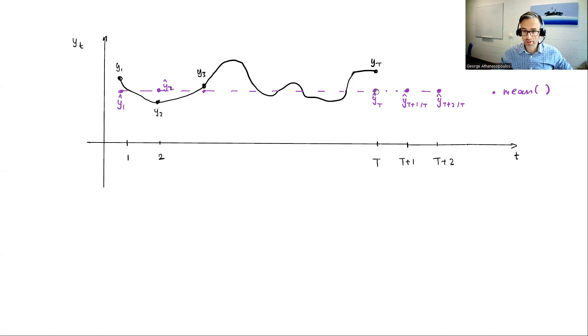Now, our fitted values in sample also lie on the average, but to actually get these fitted values, we've used all the information. We've averaged y_1 to y_T. We've taken that average, and that gives us all these fitted values. So they're not really true forecasts.